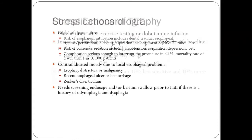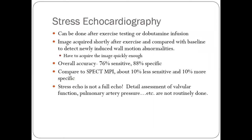Stress echocardiography is another modality used for patients who cannot perform exercise tolerance testing, such as obese patients or those with fractures. Dobutamine is infused to increase the heart rate, and at high heart rates such as 180 to 200 bpm, ischemic segments will move less. This provides an indirect assessment of stable ischemic heart disease and serves as an alternative to exercise tolerance testing or stress thallium scanning.